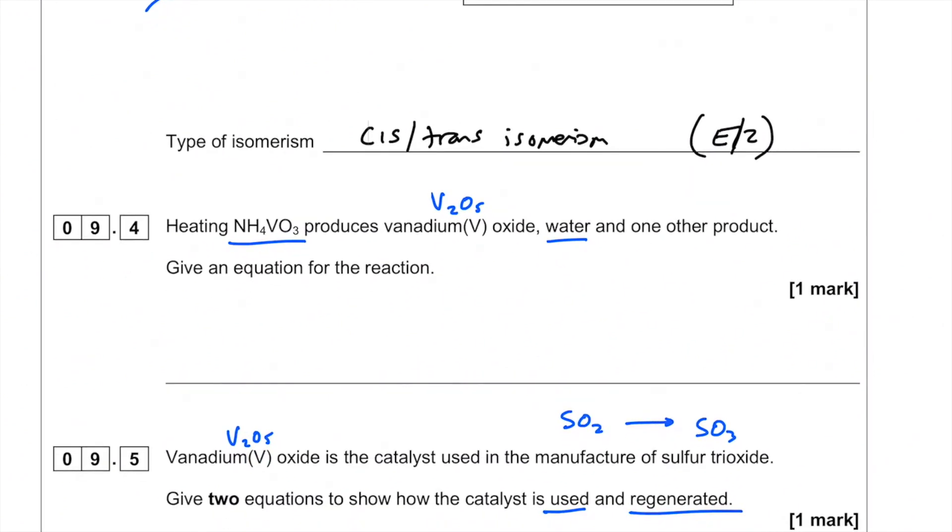So heating NH4VO3 produces vanadium 5 oxide, V2O5, water, and one other product. Give an equation for the reaction. Okay, so let's kick off with what we do know. Well, NH4VO3 gets heated, so it breaks down, no other reagent there, to V2O5. We've got water, and we've got one other product. So what's that one other product going to be? Well actually, let's balance what we've got here, because we've got V2 here. So we need two of these for a kickoff. So V2O5, that kind of makes sense, because we've got five oxygens, we've got six on the left-hand side, we've got one H2O. So what's actually left over?